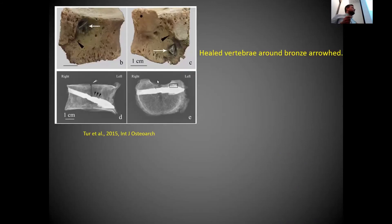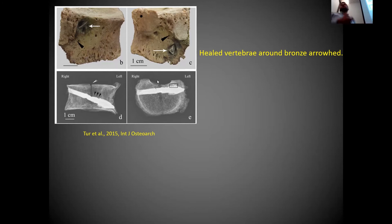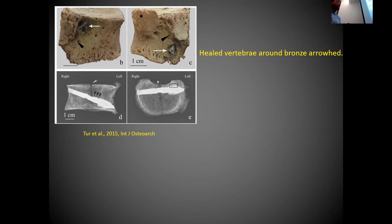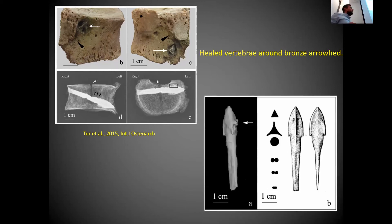There is a paper from 2015 where they found an arrow embedded in the body of a vertebra. They found that bone had healed around the arrow, integrating into the vertebra. This person probably endured great pain but survived the traumatic event. They even managed to reconstruct the shape of the arrow from within the bone without destroying the sample.